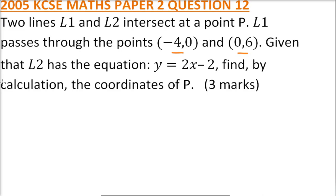So we start by getting the gradient. The gradient of L1 is equal to 6 minus 0 divided by 0 minus (-4), so that becomes positive. Minus and minus is positive, so this is 6 divided by 4, which gives you 3 over 2. Now we have the gradient.